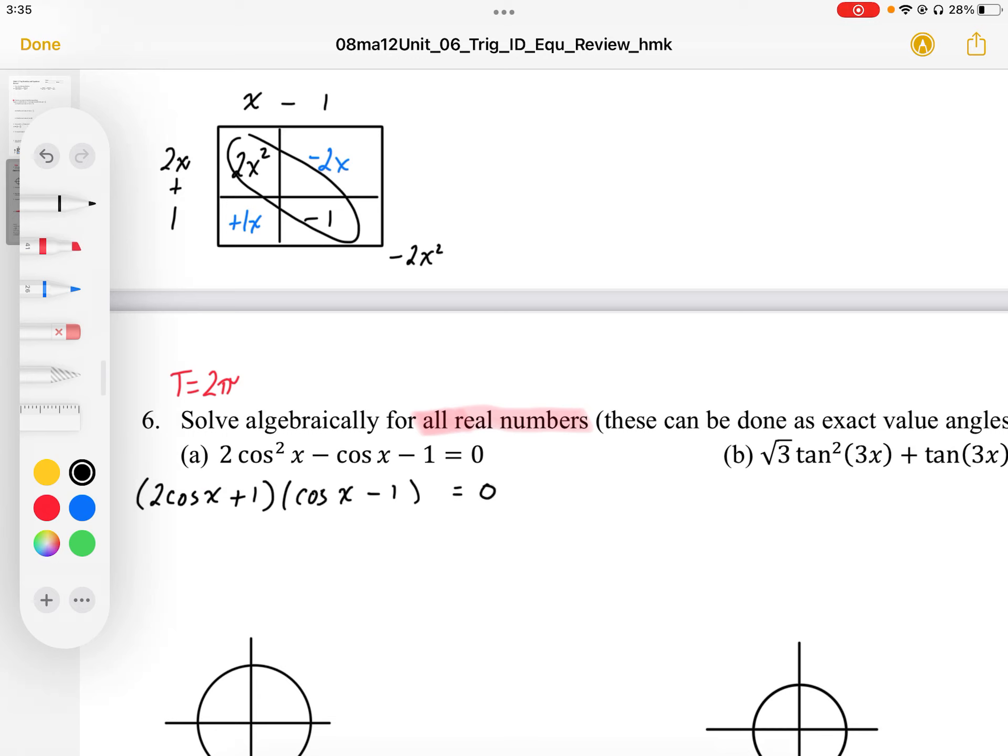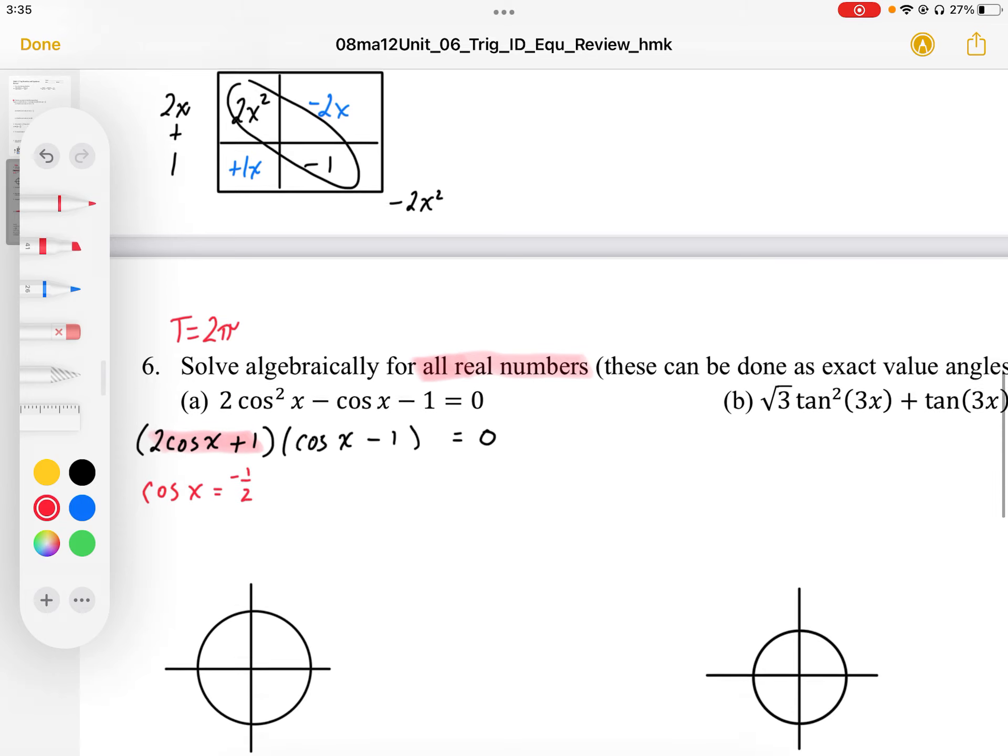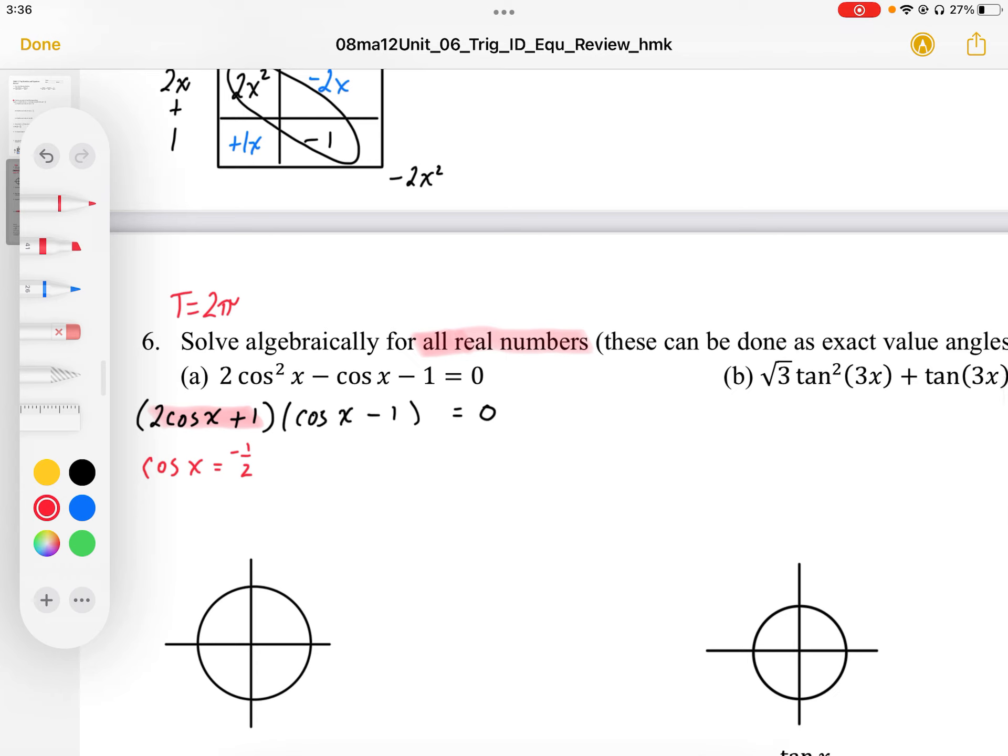Since it's equal to 0, I can treat those factors independently. Solving for that bracket there, I know that cos x is equal to negative 1/2.